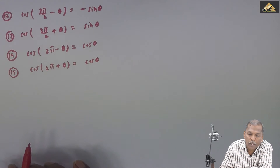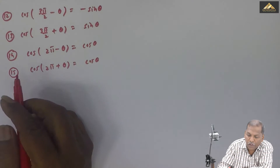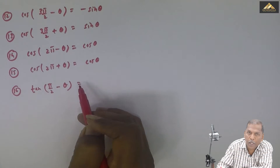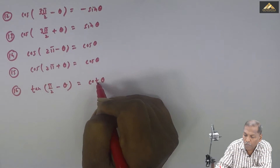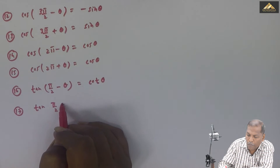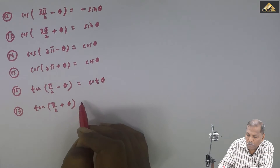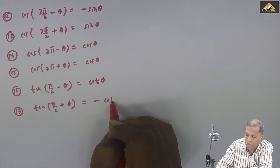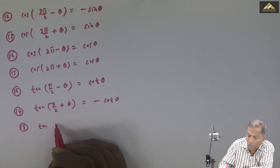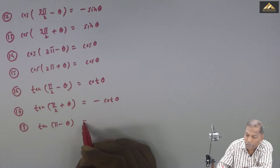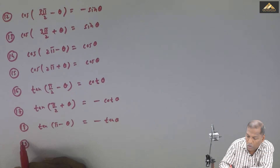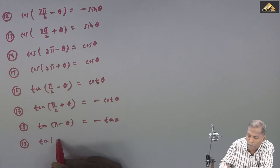Now we can see formulae related to the tangent function. Formula number 6: tan of pi by 2 minus theta is equal to cos theta. Formula number 7: tan of pi by 2 plus theta is equal to minus cos theta. Formula number 8: tan of pi minus theta is equal to minus tan theta.